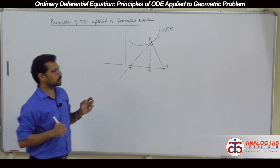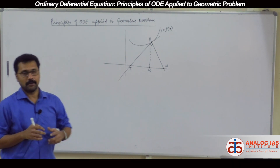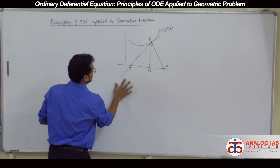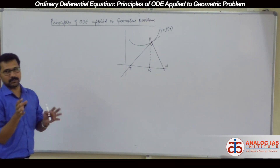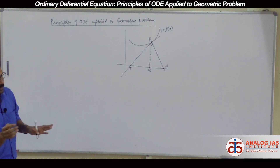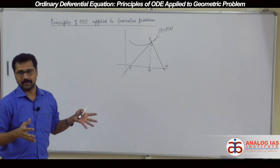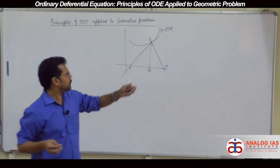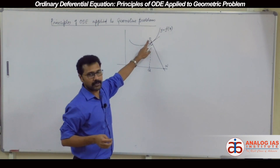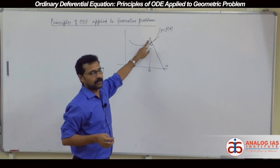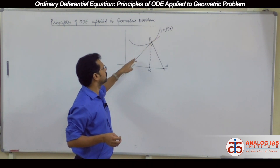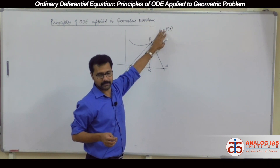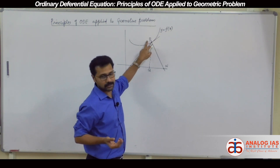For subtangent, subnormal, tangent and normal, we have certain formulae. Just take down the formulae — they are easy to derive because they are just lengths between two points. Suppose the point is x-naught, y-naught, and assuming there is a slope, the slope is dy/dx coming from the curve y equal to f of x, giving us dy/dx at the point x-naught, y-naught.